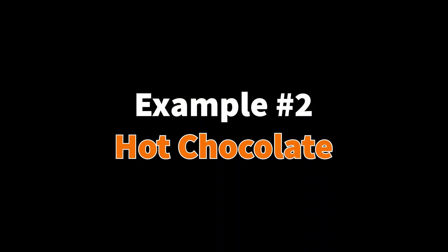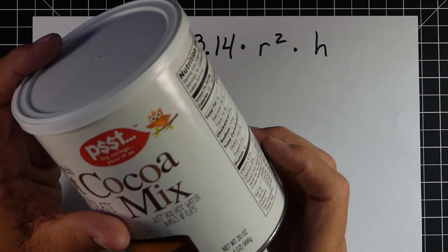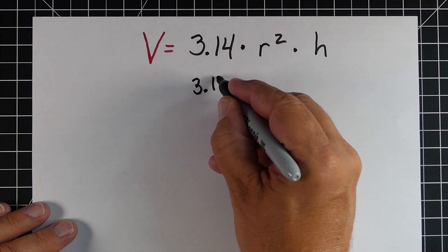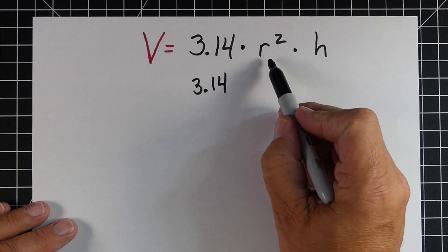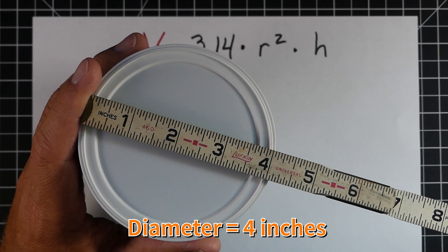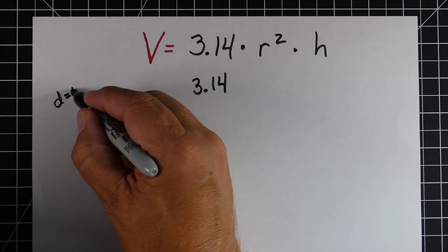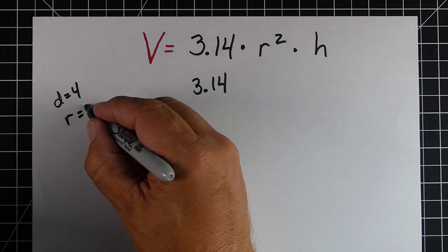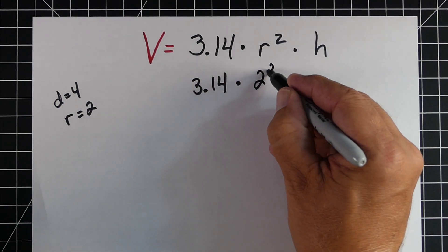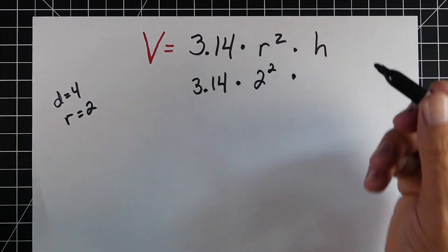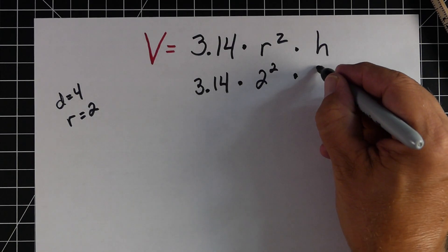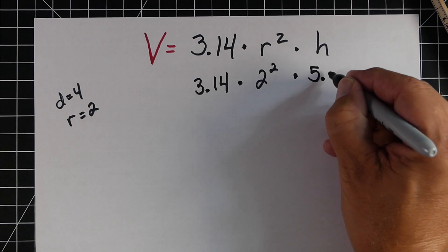Our second example is with a hot chocolate container. So, we already know the formula is pi, 3.14 times radius squared times height. The diameter of this particular base is 4 inches. So, we're working in inches this time. Well, if the diameter is 4, half that's 2. So, the radius would be 2. So, it's going to be 2 squared, and then times the height. Well, the height of this is 5 1⁄4. We're going to go decimals, and call it 5.25.